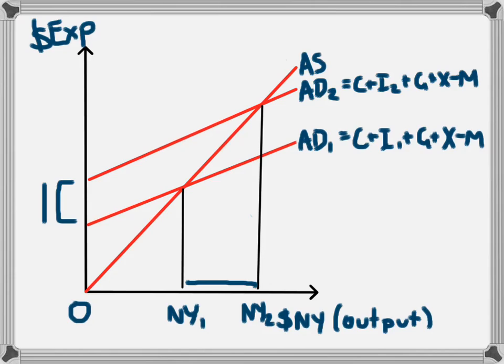The effect of expansionary monetary policy—decreasing interest rates, increasing investment from I₁ to I₂—is increased aggregate demand from AD₁ to AD₂ and increased national income from NY₁ to NY₂. This means greater output, higher economic growth, and lower unemployment.